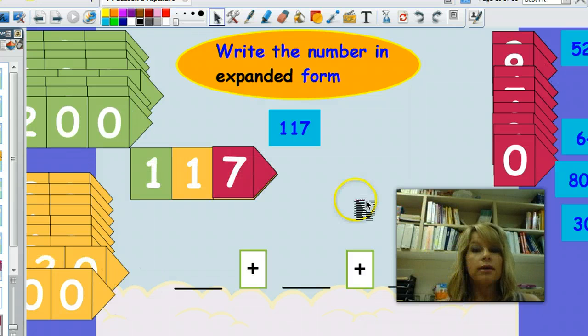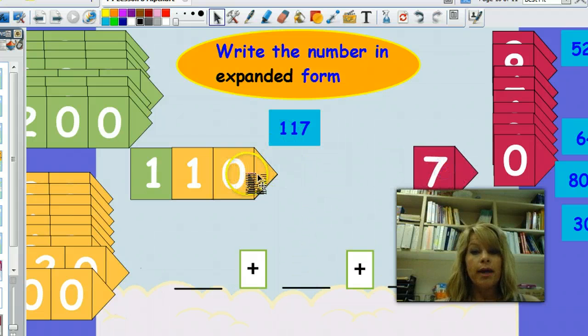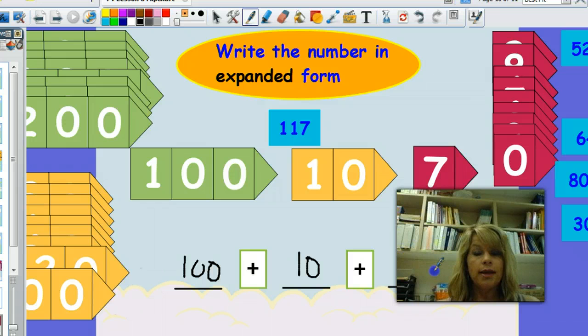Let's check your work. I built my number and it matches this. And now I'm going to expand it, break it apart into its pieces. Always with hundreds, then tens, then ones. So my expanded notation is 100 plus 10 plus 7.